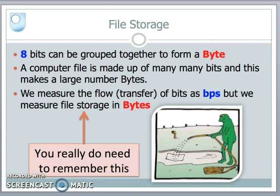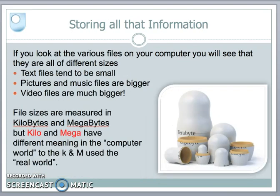We've seen in earlier tutorials that 8 bits can be grouped together to form a byte. We can do a lot with a computer byte — we can represent a character, for instance. A computer file will be made up of lots and lots of bits, which means it'll be made up of a large number of bytes. We measure file transfer in terms of bits per second, but we measure storage capacity of a file in terms of its bytes. Do remember that distinction between bits and bytes and how we use them.